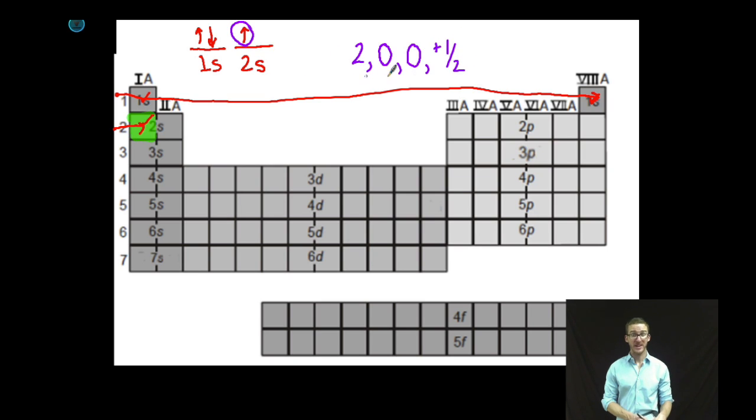Again, I could write a set of quantum numbers for each of these electrons, but for the purposes of this video and on your worksheet, we're just going to write a set of quantum numbers for that last one to fill.